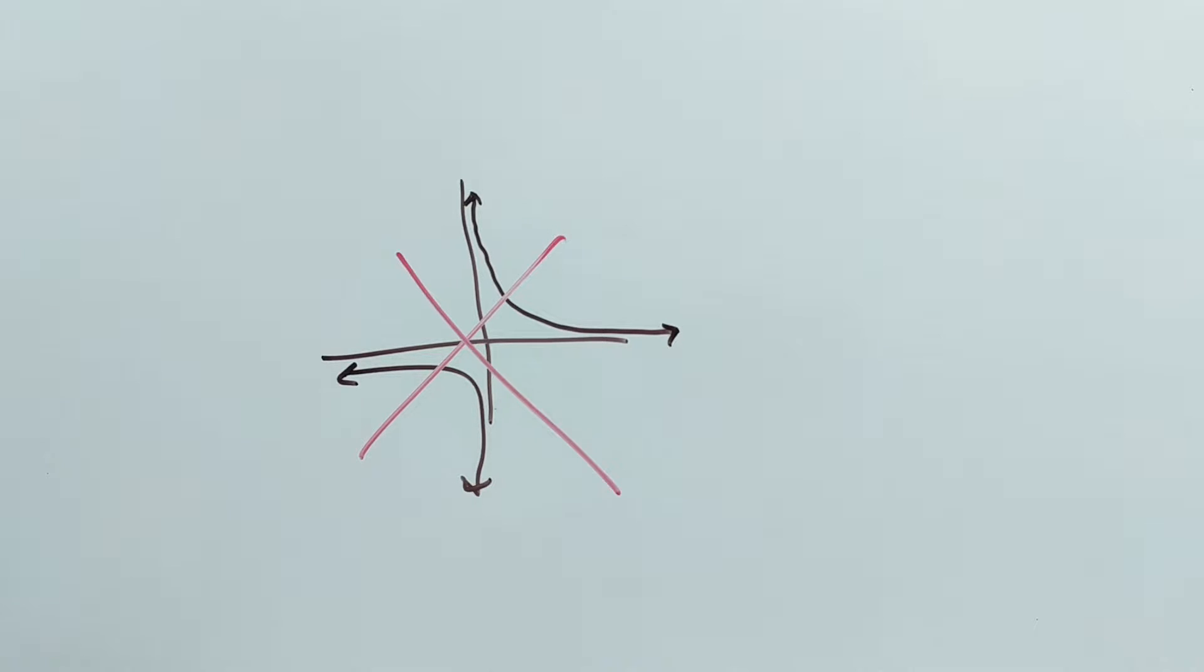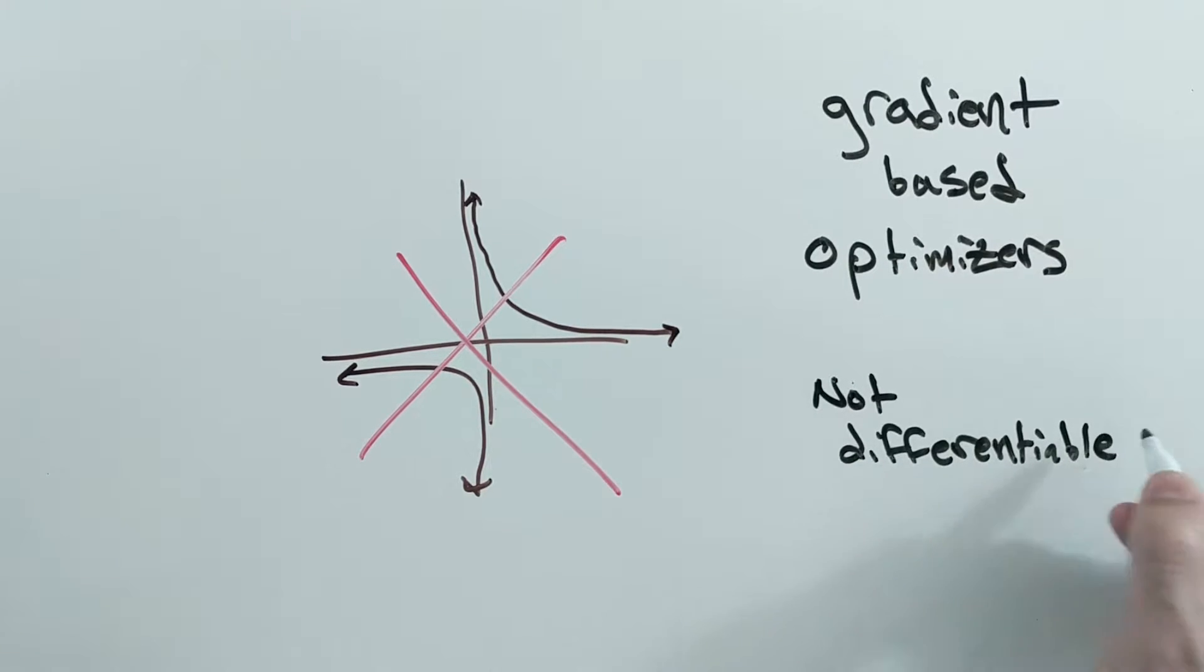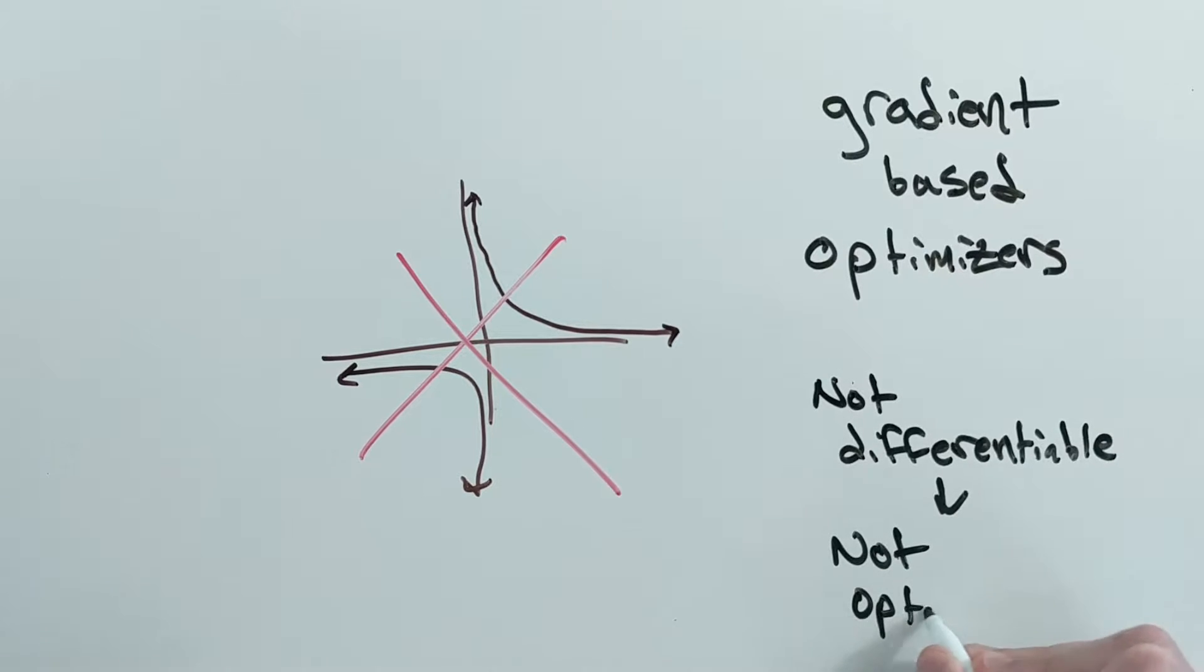That is, a lot of machine learning methods use gradient-based optimizers, which just means that the function they optimize has to be differentiable in order for it to learn. Accuracy, precision, and recall aren't differentiable, so we can't use them to optimize a lot of machine learning models.